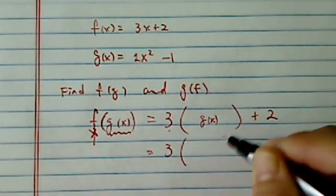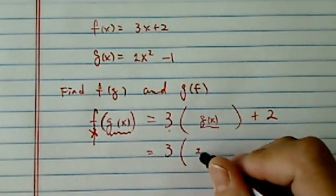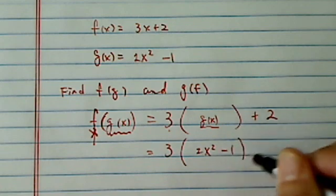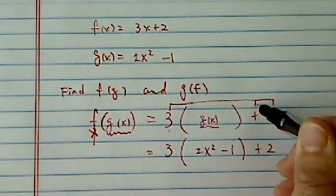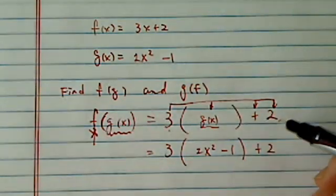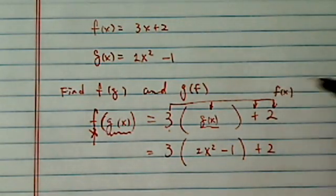And then from there, everything is pretty easy, and then you substitute what g of x is. It's 2x squared minus 1 plus 2, but the form is 3 something plus 2. That's function of x.